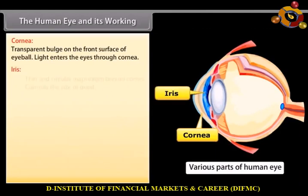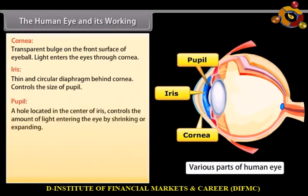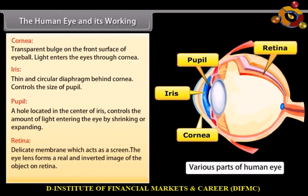Iris — it is a thin and circular diaphragm behind the cornea which controls the size of the pupil. Pupil — it is a hole in the center of the iris that appears black and controls the amount of light entering the eyes by shrinking or expanding. Retina — it is a delicate membrane which acts as a screen. The eye lens forms a real and inverted image of the object on the retina.